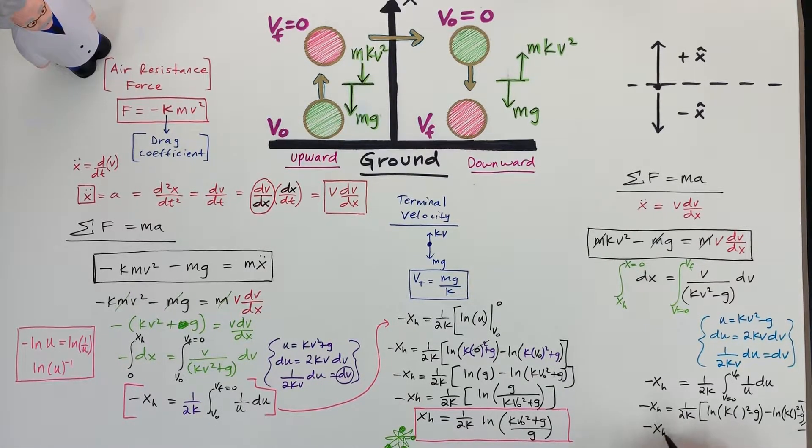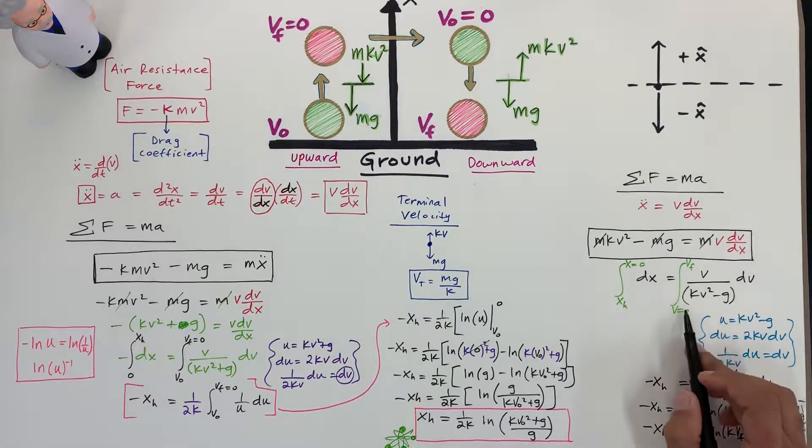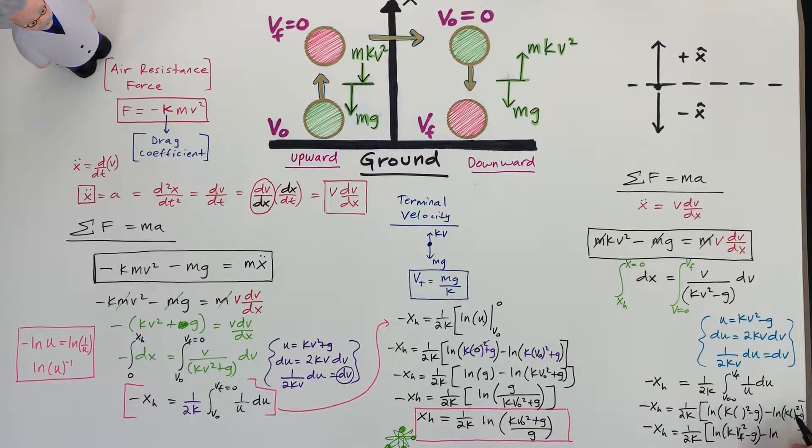So we got minus x_h, 1 over 2 k. Here we got ln of k final. Our final is v final, so v final squared minus g. And initial is going to be zero. So ln of zero in here. This is v final. So zero, I don't have to write this term here. I'm going to only be left with negative g.